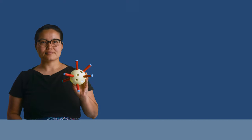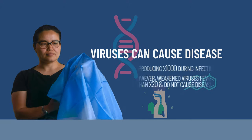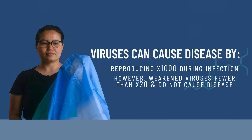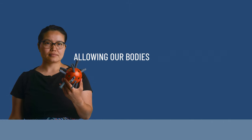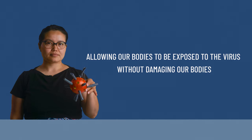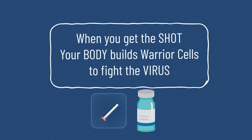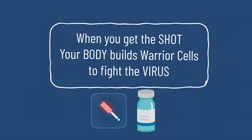These vaccines are made by processing the virus to weaken it. Viruses can cause disease by reproducing themselves thousands of times during an infection, while weakened viruses usually produce fewer than 20 times, so they do not cause disease. But they replicate well enough for our bodies to make immune memory cells, allowing our bodies to be exposed to the virus without damaging our bodies. When you get the shot, your body will learn what the virus looks like and build immune warrior cells who are then on the lookout for the virus.